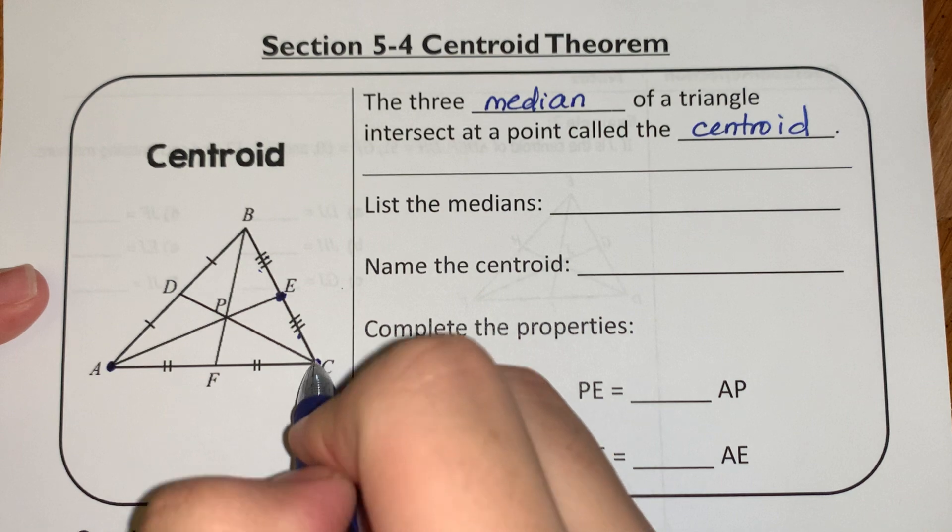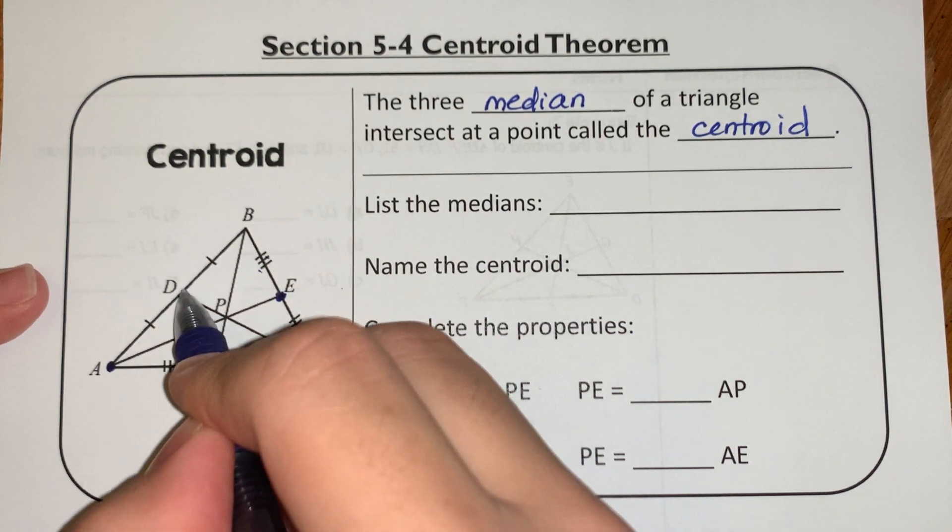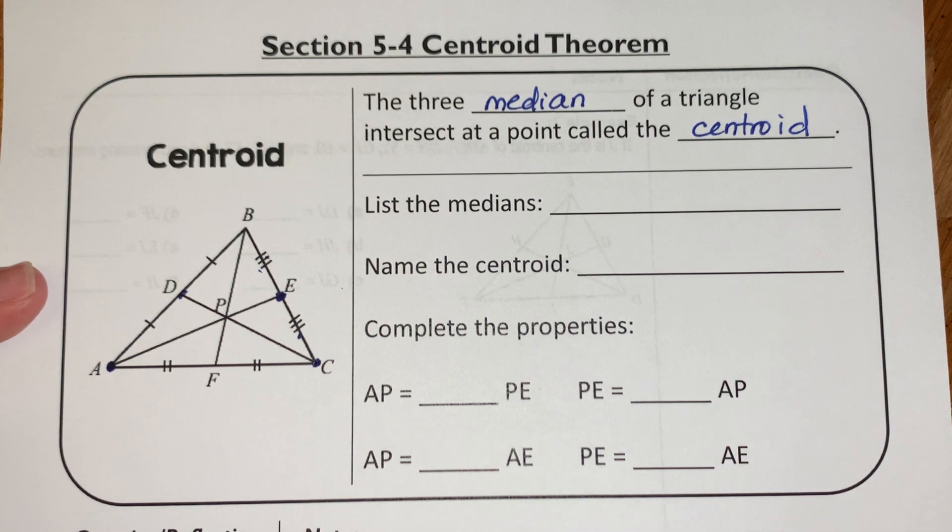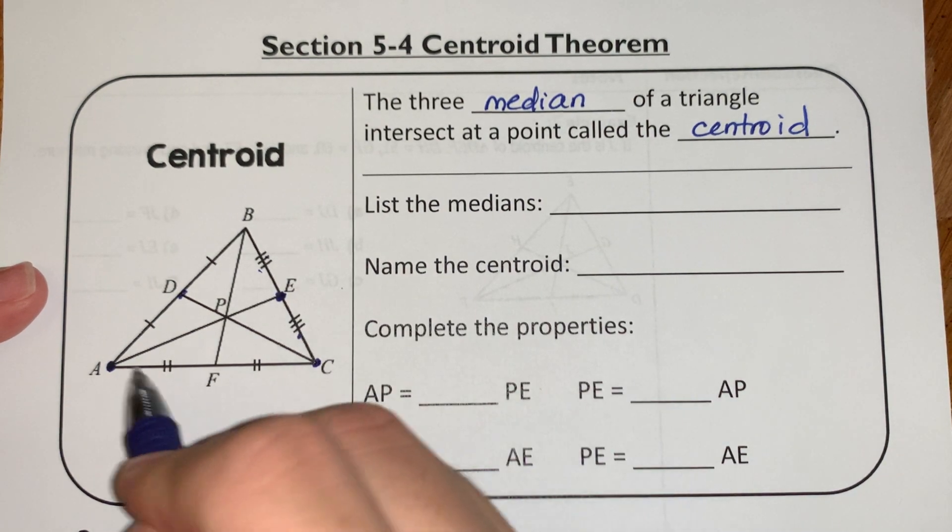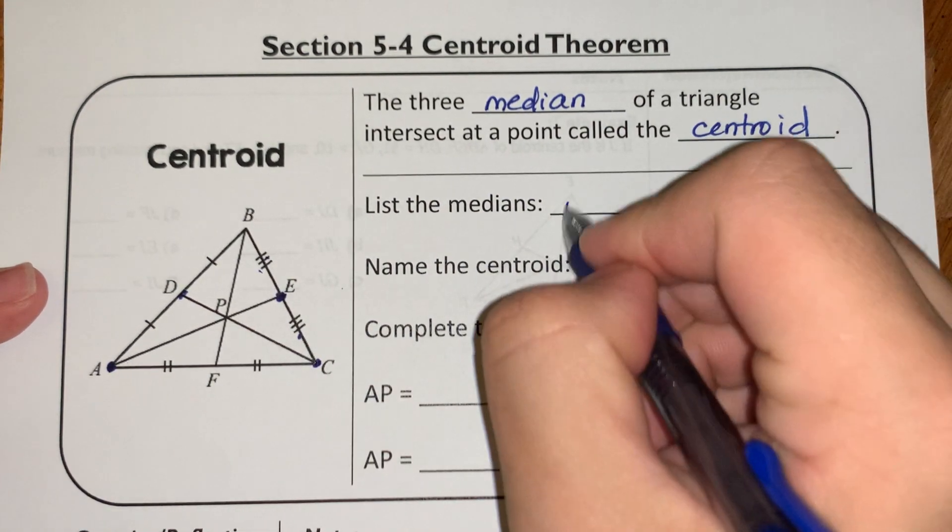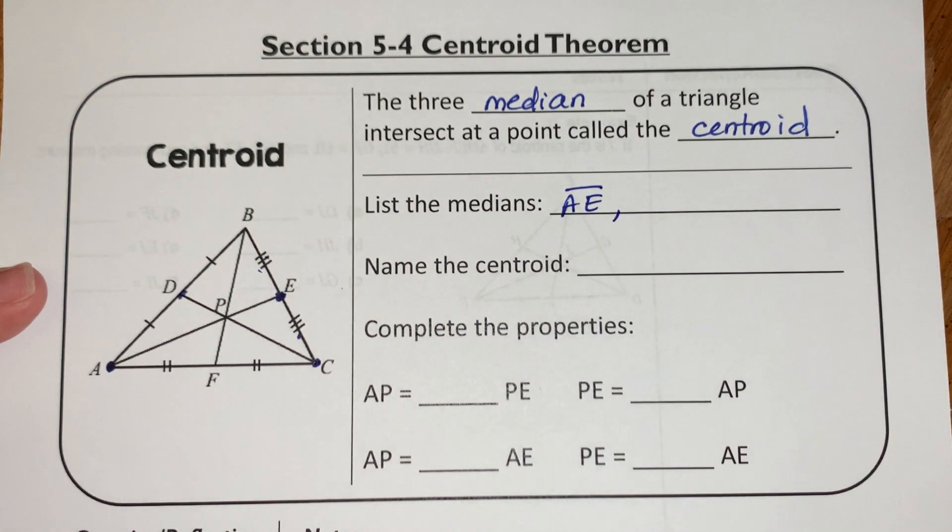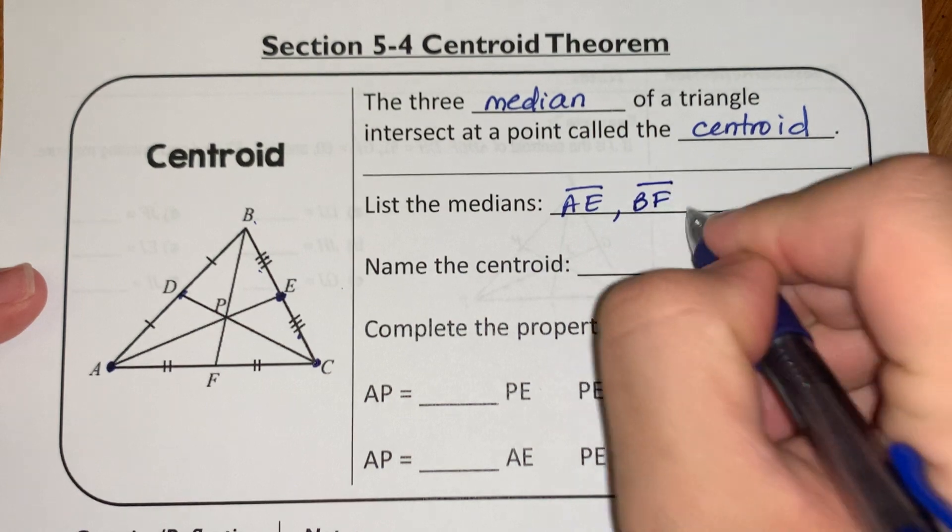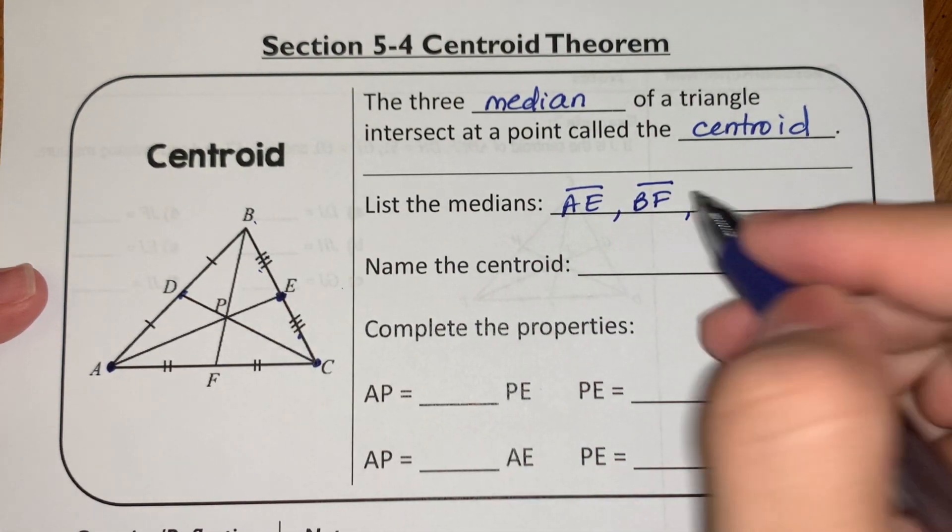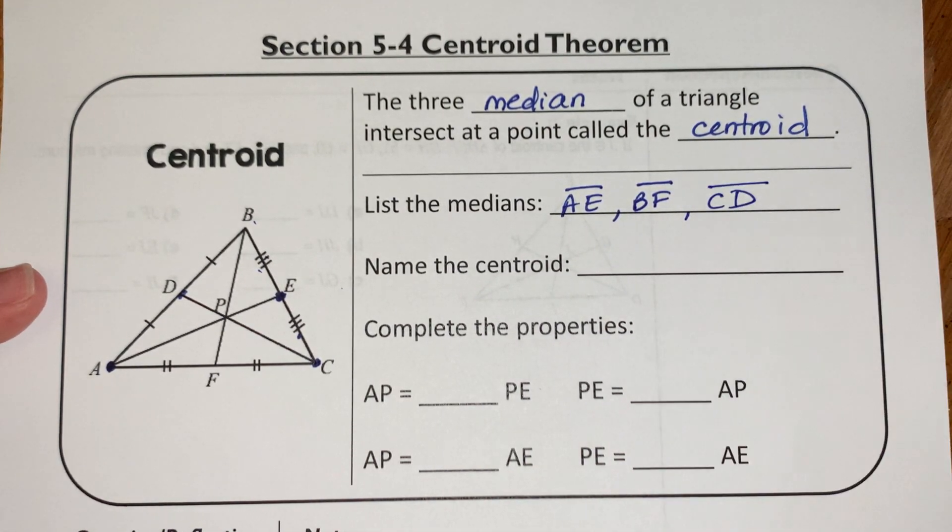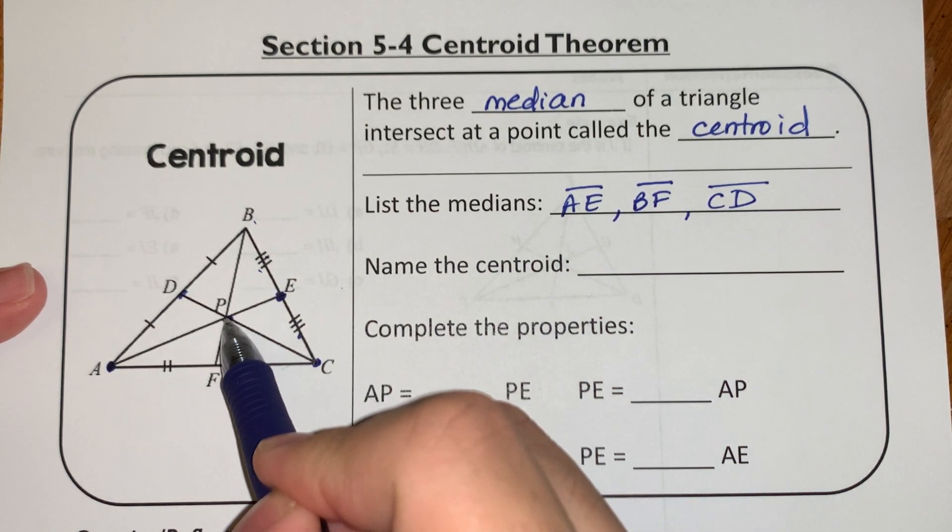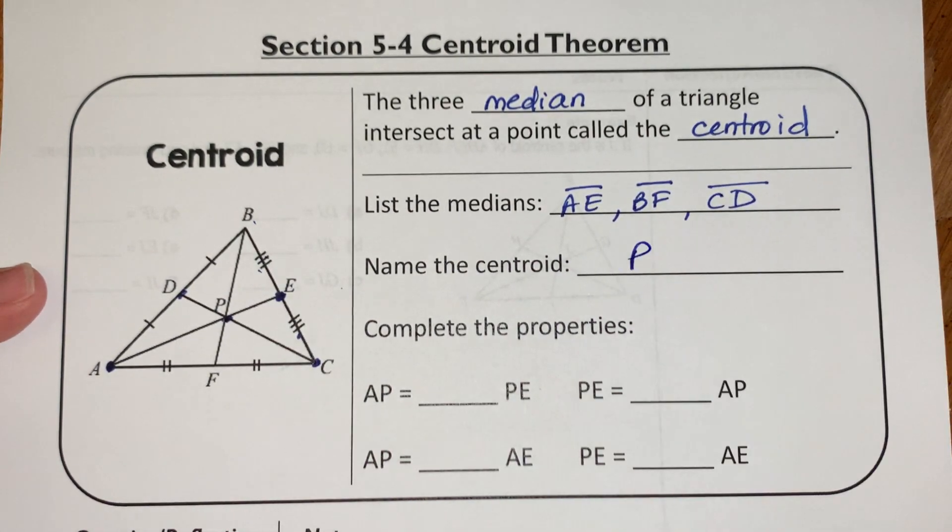Same thing over here. From the vertex to the middle of that side connects together to give me the median. And that's the same case for BF. So if I list the medians, my medians are from A to E, the other median is from B to F, and the last one is from C to D. And then they all come together at this middle point called the centroid, and we just call that point P.